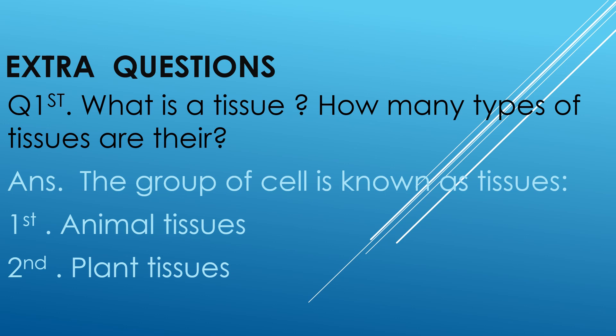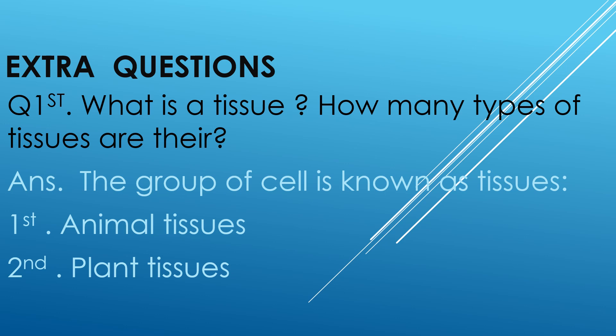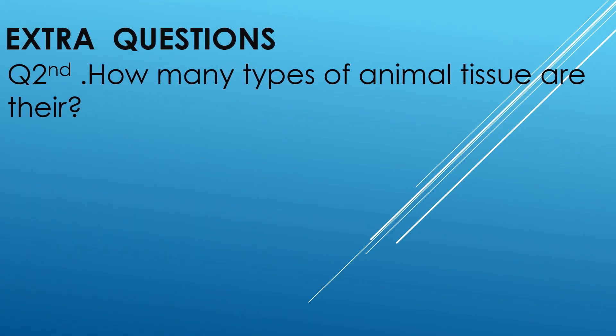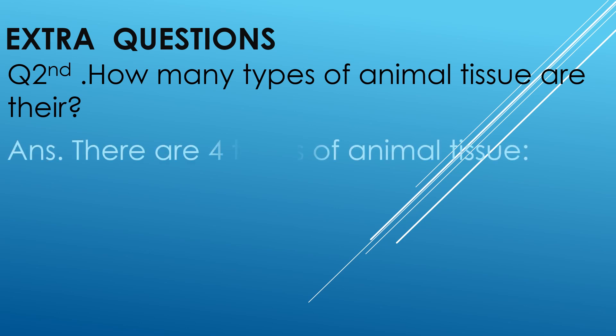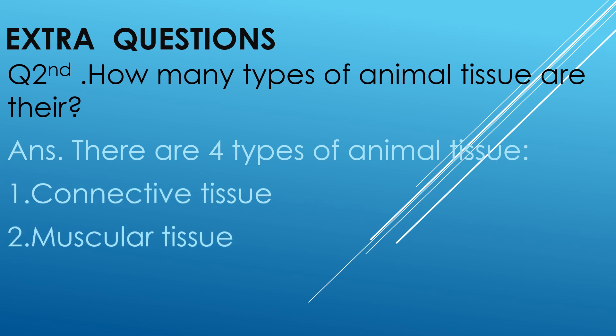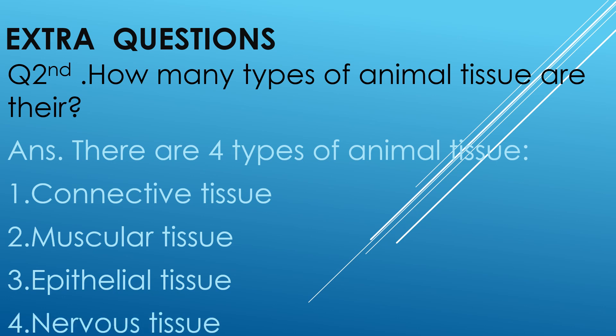Let's discuss question second. How many types of animal tissue are there? There are four types of animal tissue. First, connective tissue. Second, muscular tissue. Third, epithelial tissue. Fourth, nervous tissue.